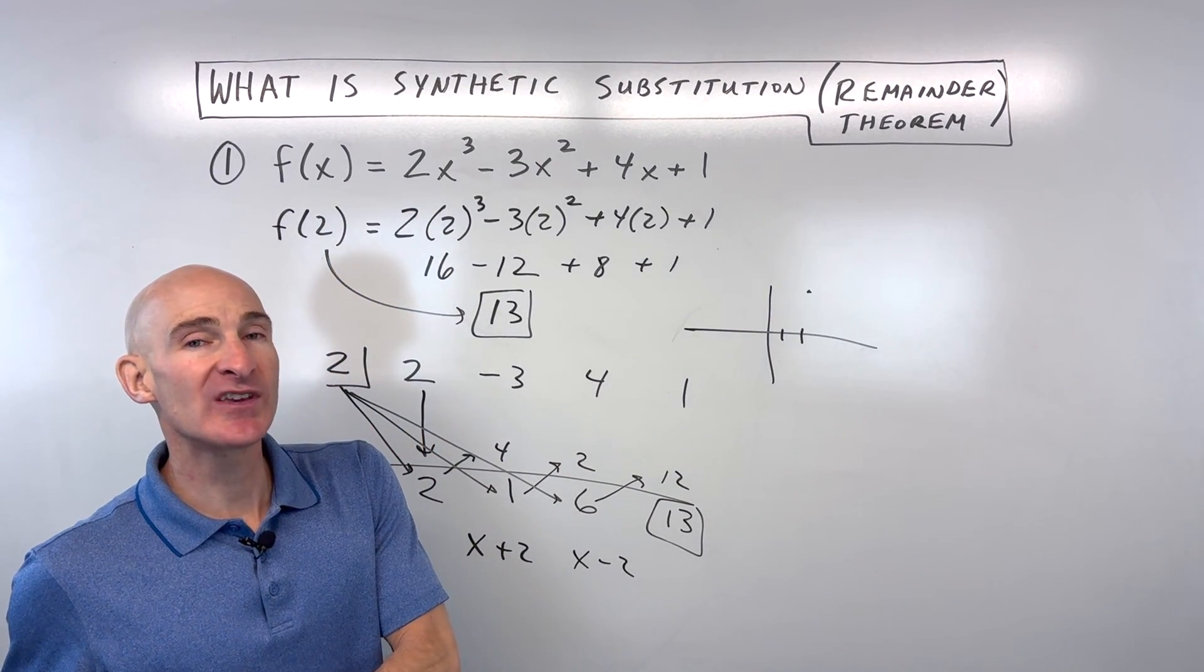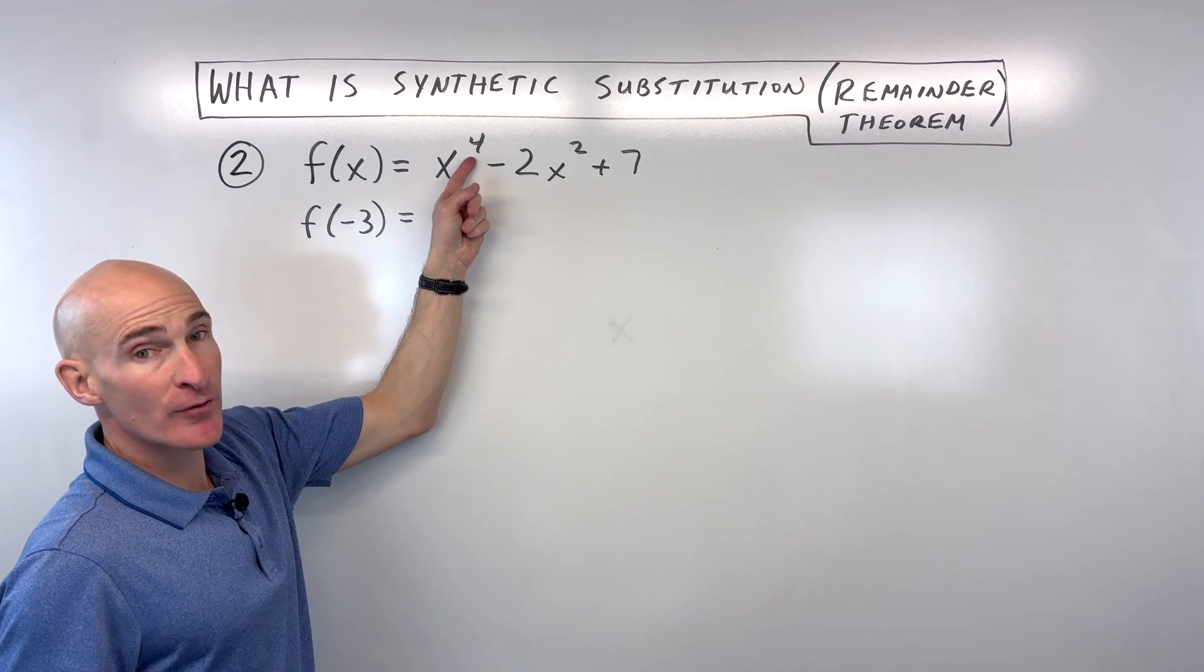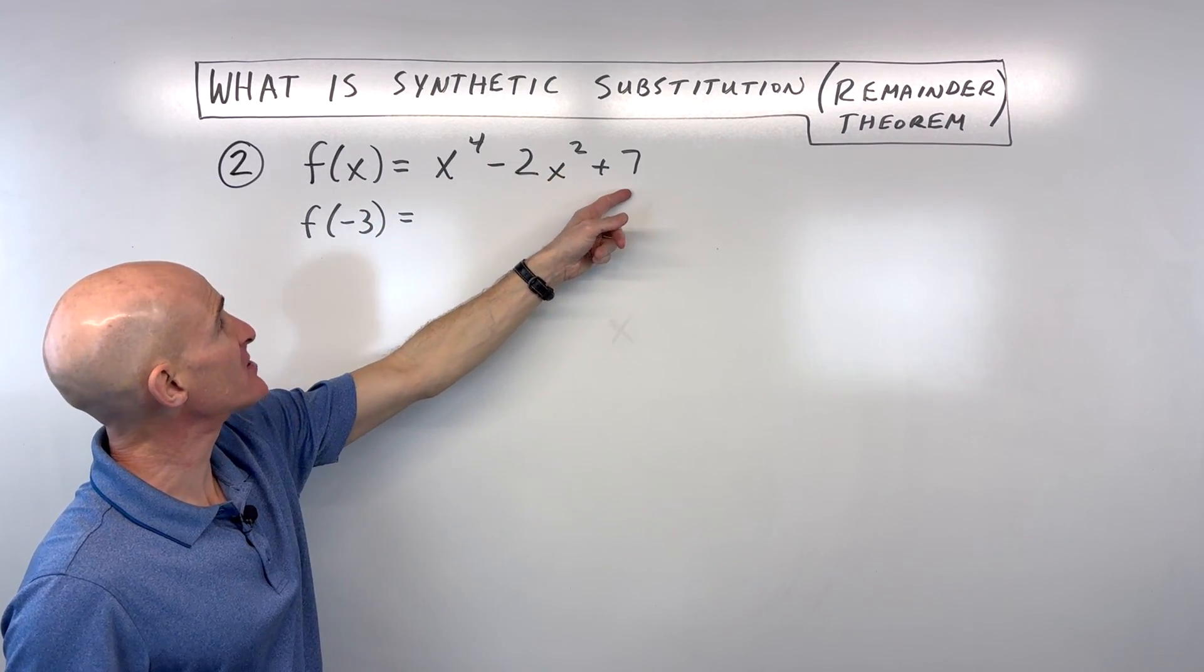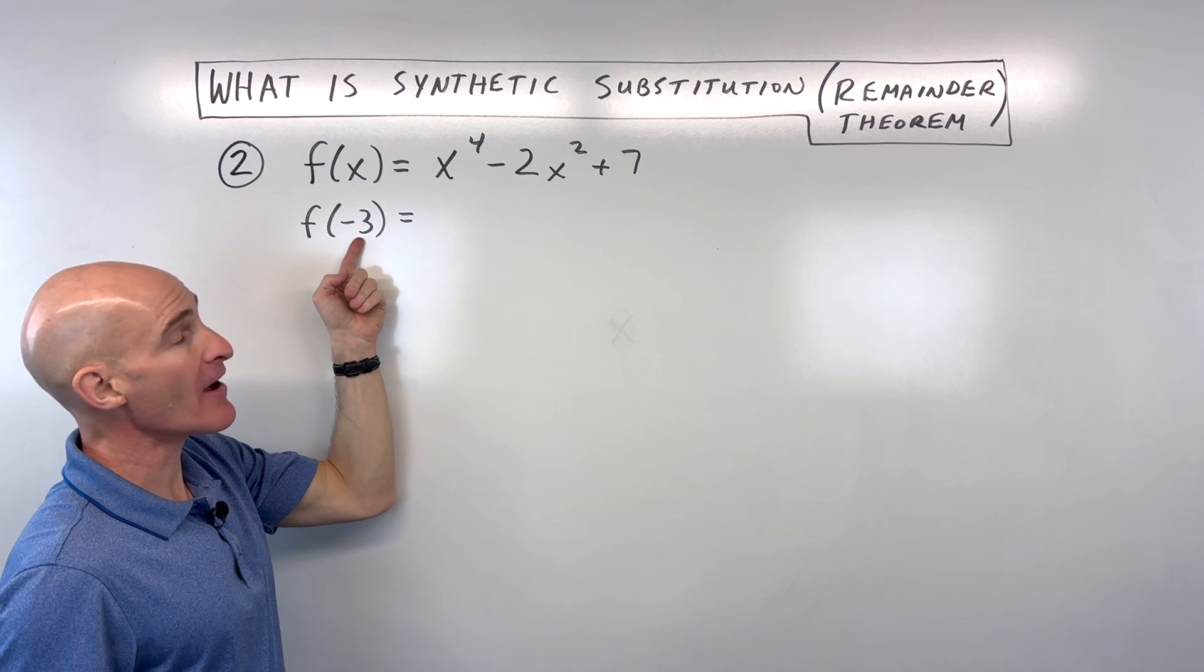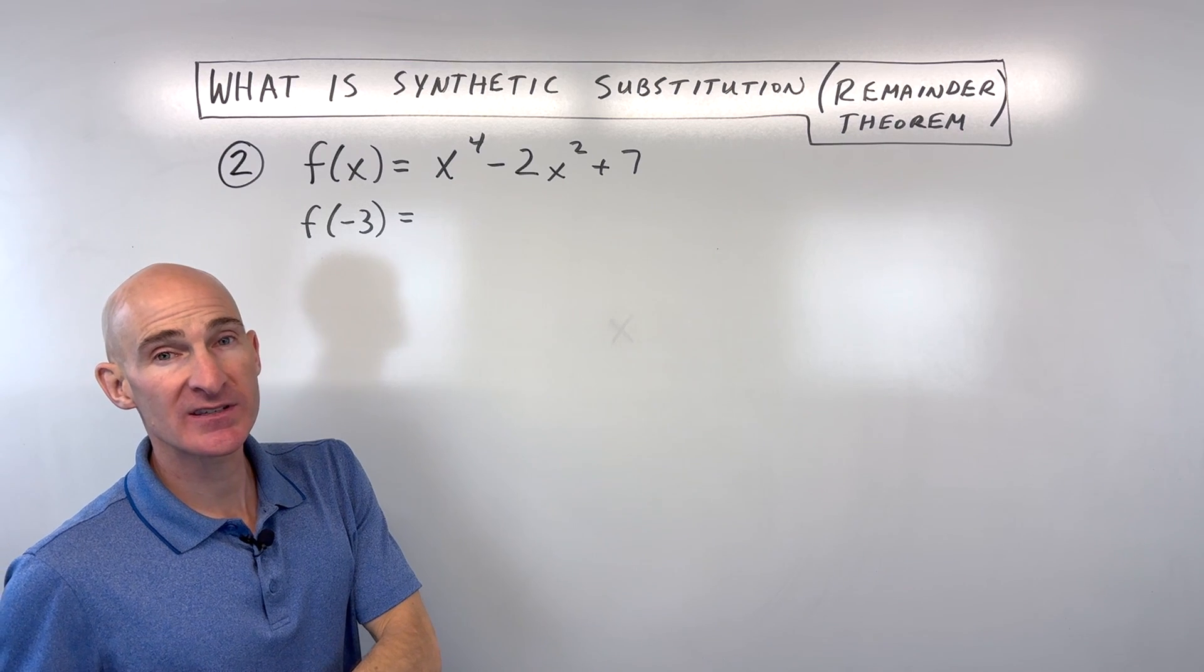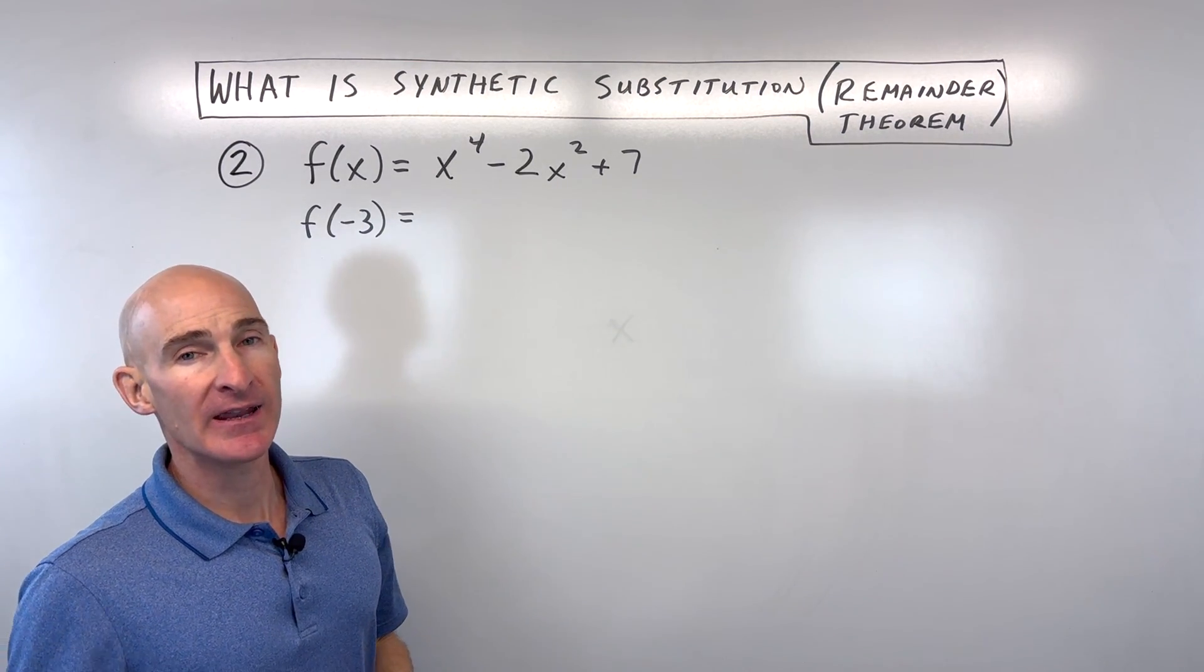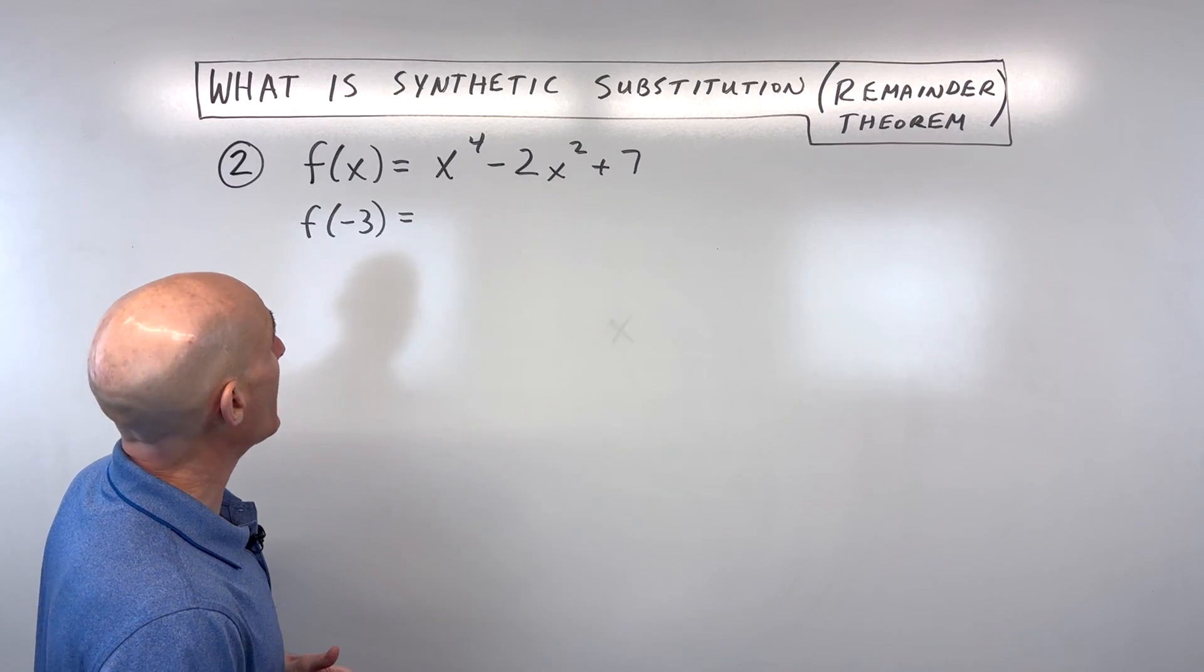Let's look at another example. See if you can try this one on your own. So we've got f of x equals x to the 4th minus 2x squared plus 7. And we want to evaluate what is f of negative 3. So what do you think? How would you do that one? Now, I would use a synthetic method, but then also do the direct method to check your work and get some practice with this one.